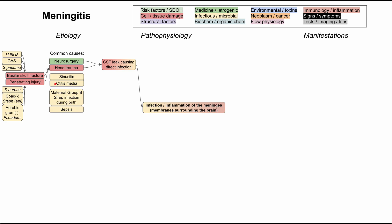Going back to the common causes, sinusitis and otitis media are both relevant because there is possible contiguous spread from the nose, ears, and eyes to the meninges and the cerebrospinal fluid. These parts of your head are very close to the blood-brain barrier, so an infection such as sinusitis or otitis media — infection of the middle ear — can continually spread to the meninges.